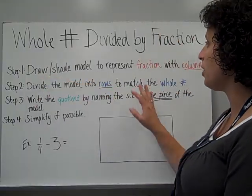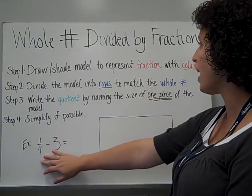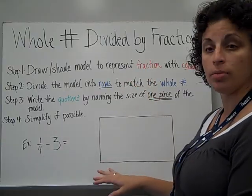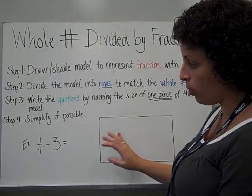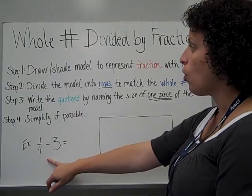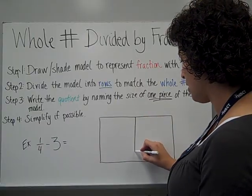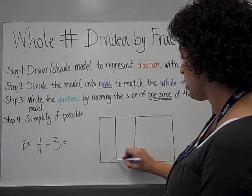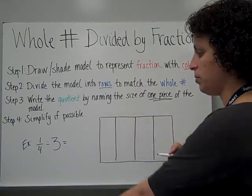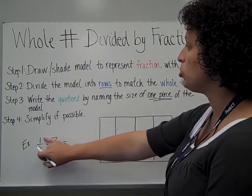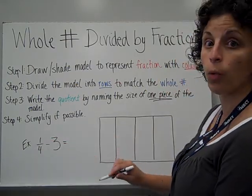Step one is to draw your model and represent the fraction with columns. So here's my whole model, and I need to show 1 fourth of this. So I'm going to cut it half and half again. So now I have my four columns, because my denominator is a 4, and I need to shade 1 fourth.